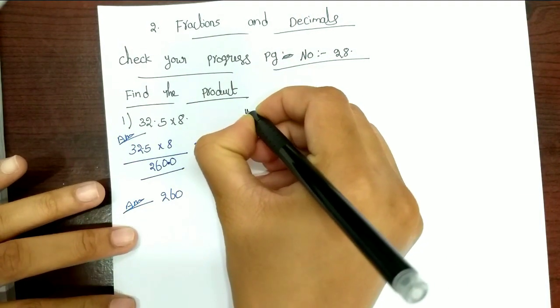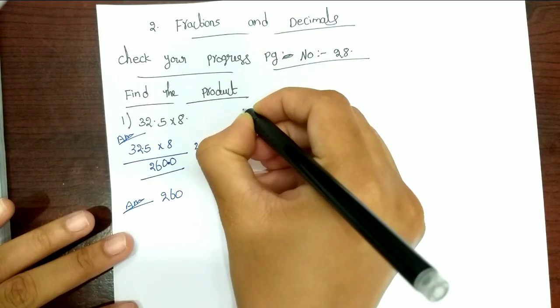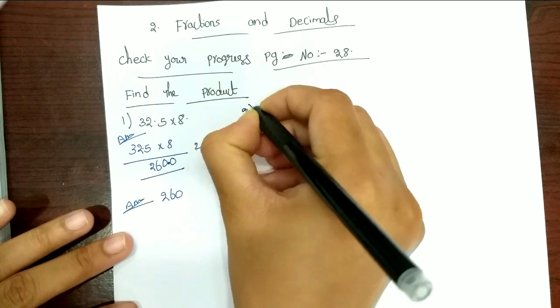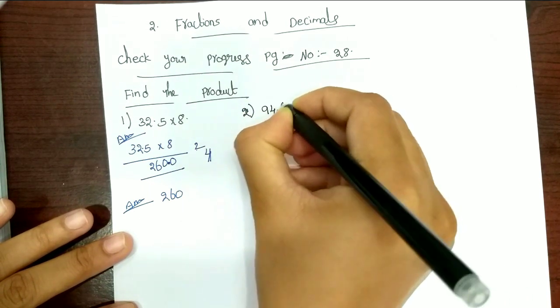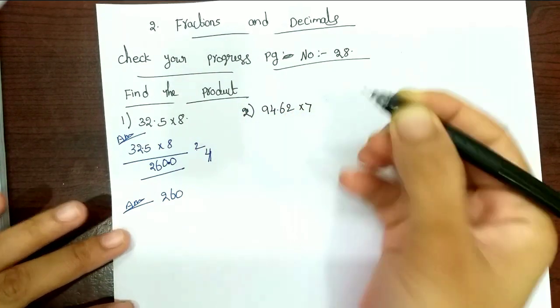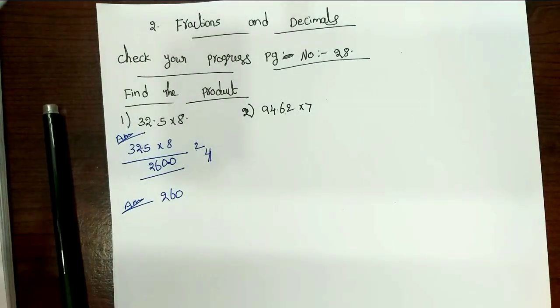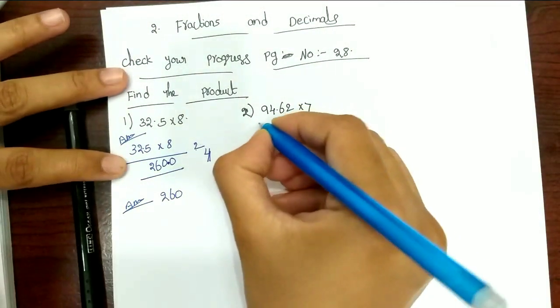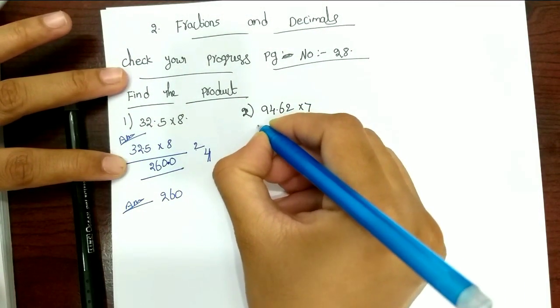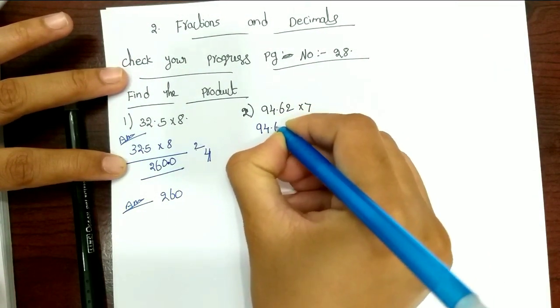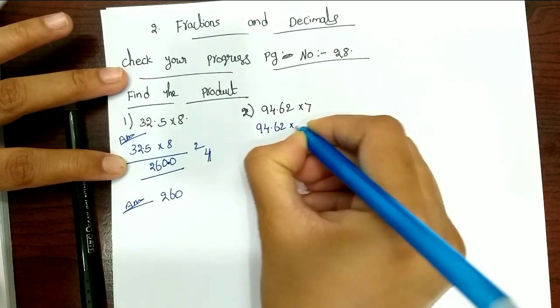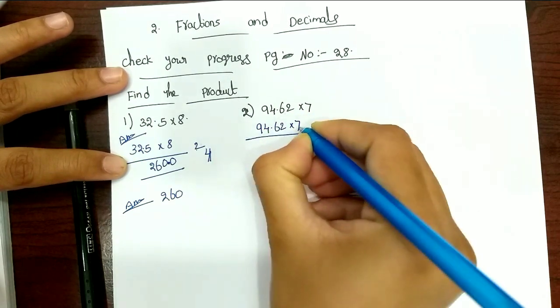Next, second one. Second one: 94.62 into 7. Okay? So first, multiply. 94.62 into 7.